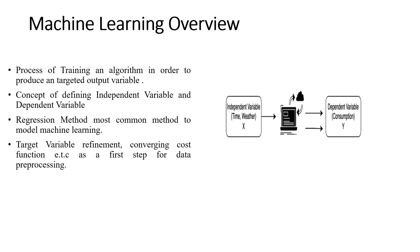So it is a concept of defining independent variable and dependent variable, and machine learning offers one of the most popular methods, the regression method, in order to model machine learning. So target variable refinement, converging cost function are the first step for data preprocessing. So we need to refine our target variable which is the consumption. So in order to do so we will compute different statistical variables like the skewness, kurtosis, which then will be further evaluated whether or not we need to refine the consumption data.